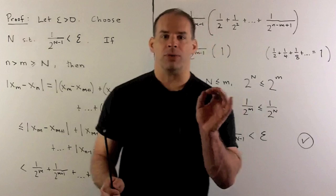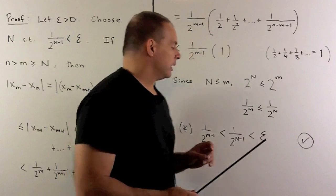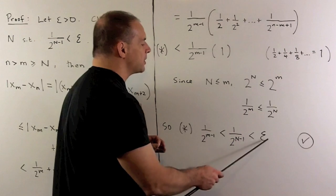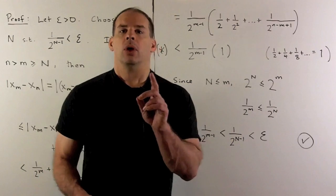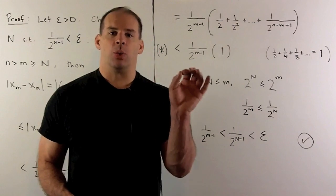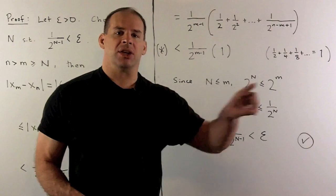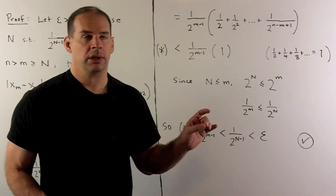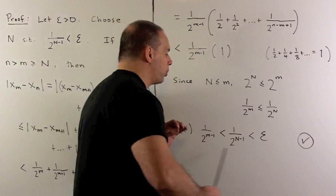One thing we have to worry about: if you give me any epsilon, can I find an N that gets this term below that epsilon? Well, 1/2^{N-1} is going to go down to zero as we let N go to infinity. So that's not going to be a problem. That's going to give us our proof.